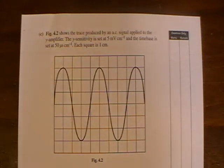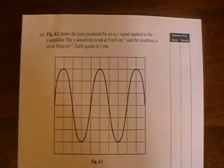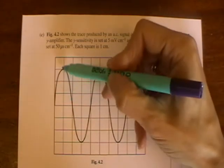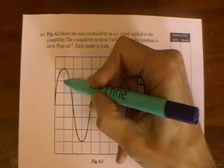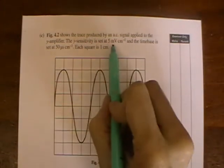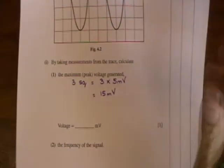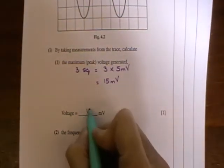By taking measurements from the trace, calculate the maximum voltage generated. So you can see that each square here is a centimeter. We are looking for the maximum voltage generated, so we're looking at the amplitude of the signal. The amplitude of the signal is 3 squares, and each square is equal to the Y sensitivity of 5 millivolts per centimeter. Therefore the answer is 15 millivolts.